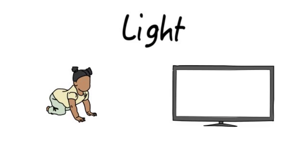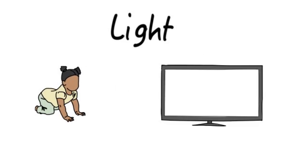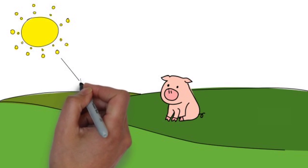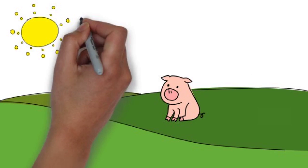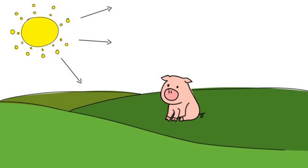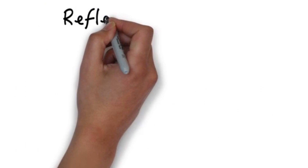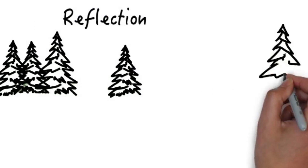Light is a form of energy that can be seen by the eye. Some sources of light also release heat, like the sun. Light moves in a straight line, in all directions, but when it reaches an object, it bounces off or becomes absorbed by the objects. Objects that absorb light appear to be dark, while objects that reflect a lot of light appear to be bright. Light may take different paths depending on the way it interacts with surfaces.